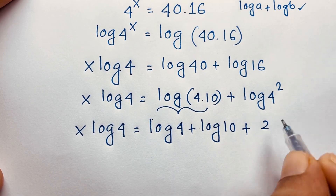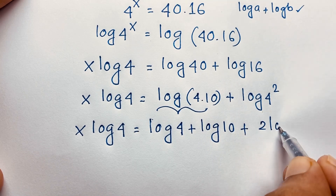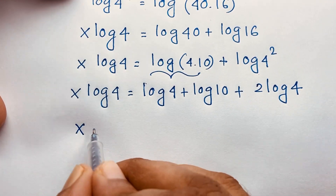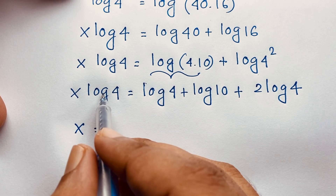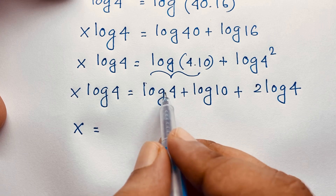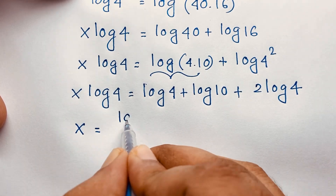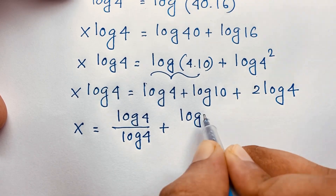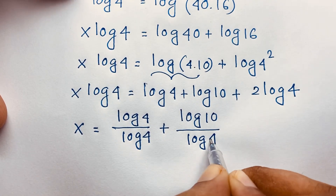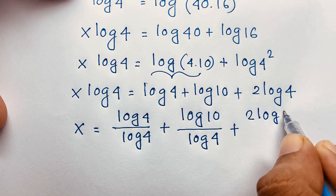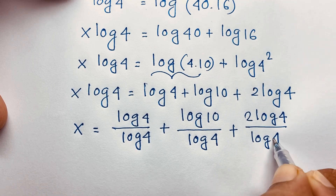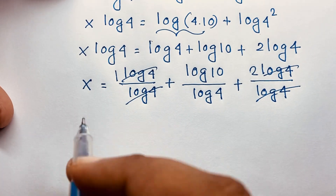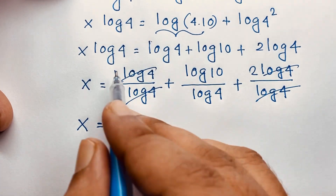So x log 4 equals log 4 plus log 10 plus 2 log 4. Dividing both sides by log 4, the log 4 terms cancel. We get x equals log 10 over log 4 plus 1 plus 2. The 2 log 4 over log 4 gives 2, and log 4 over log 4 gives 1, so x equals 3 plus log 10 over log 4.